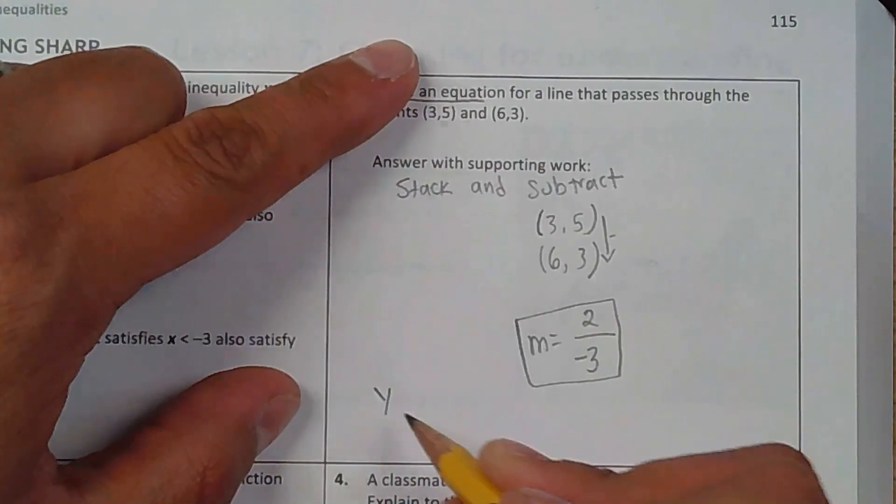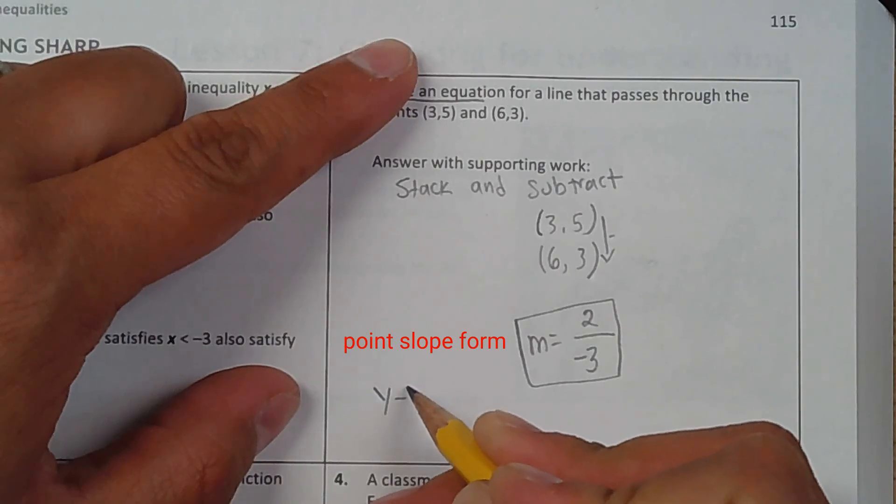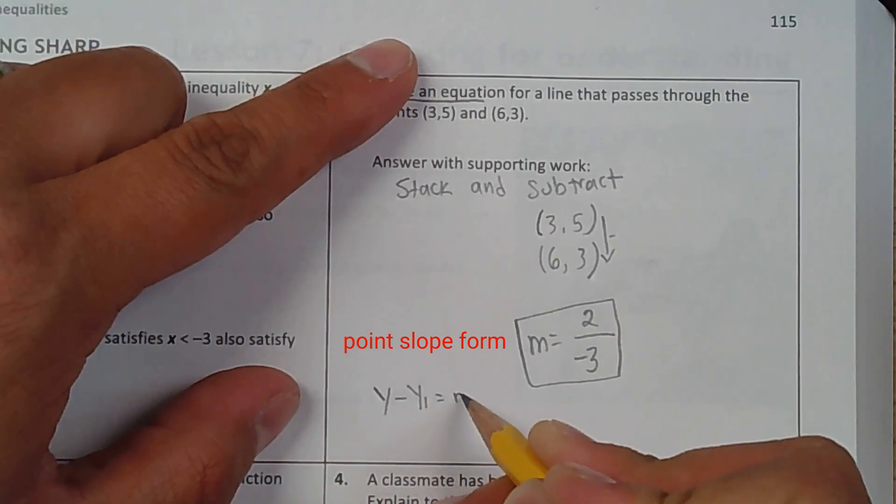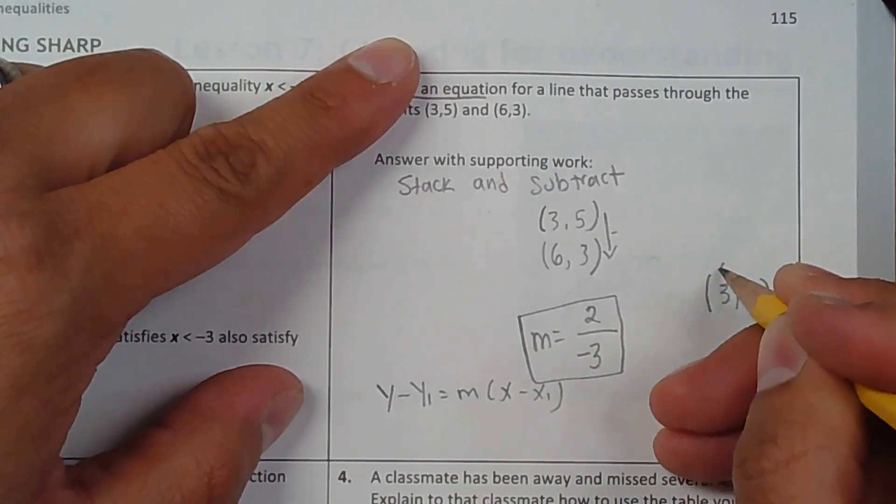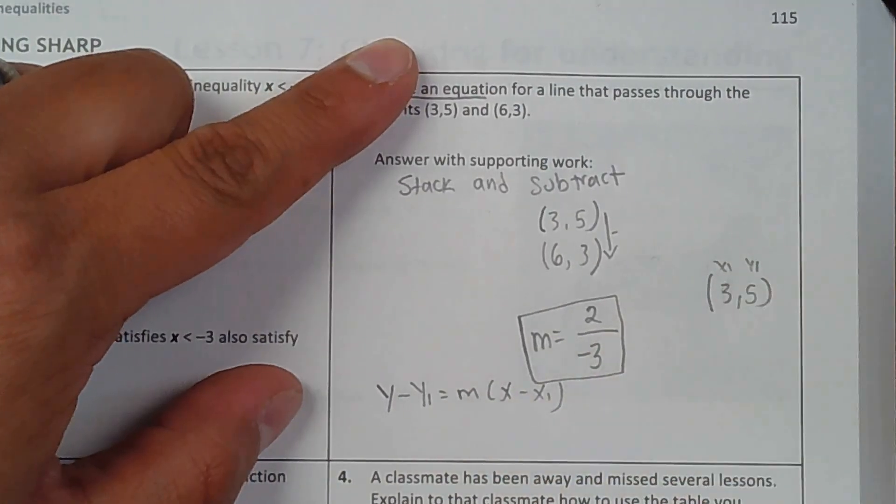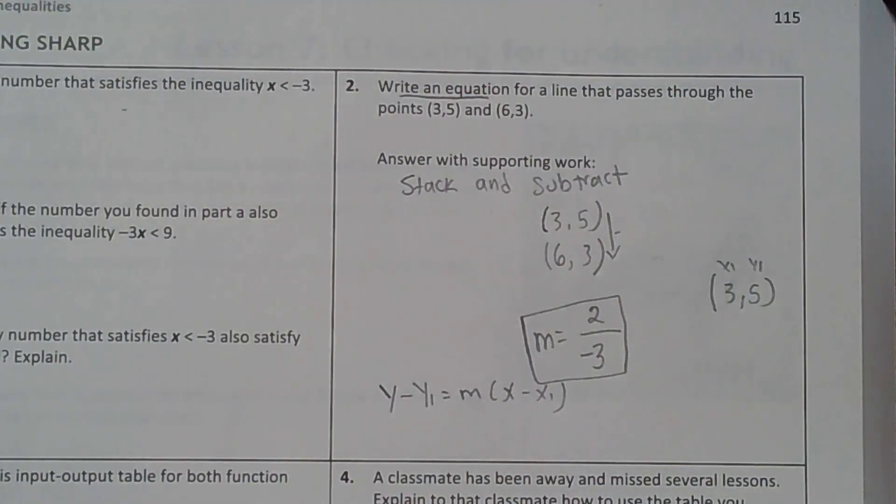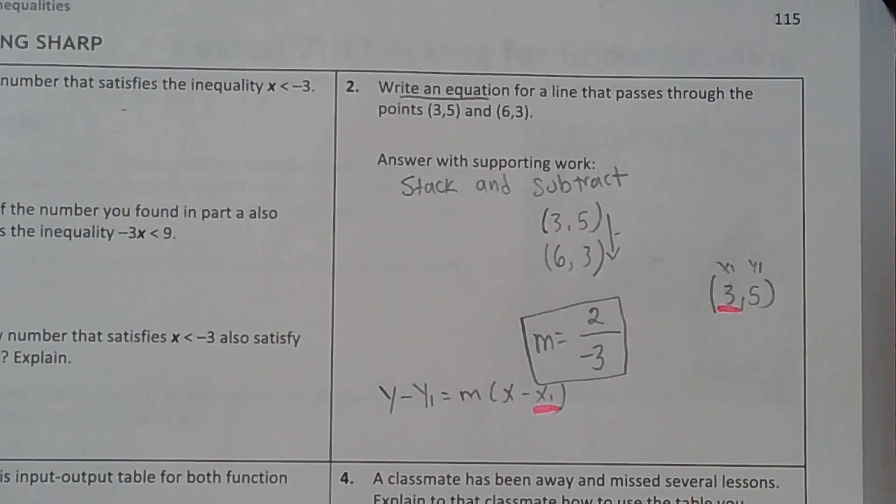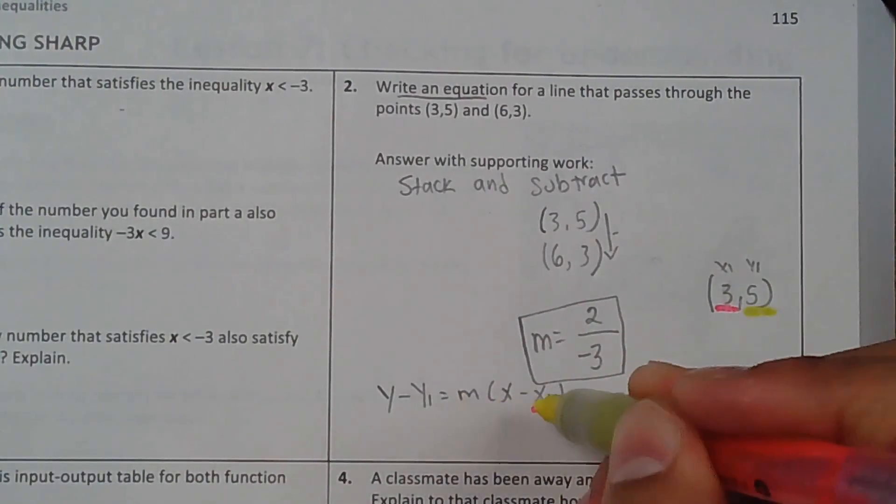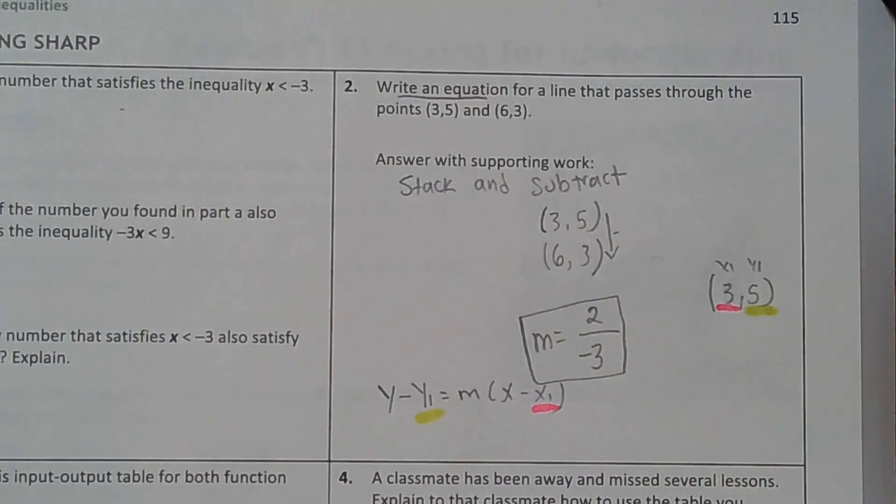I'm going to write the point-slope form: y minus y1 equals m times x minus x1. This is x1, this is y1. So now I'm going to replace some of these values. So x1 is this value, y1 goes here, and my slope is over here.